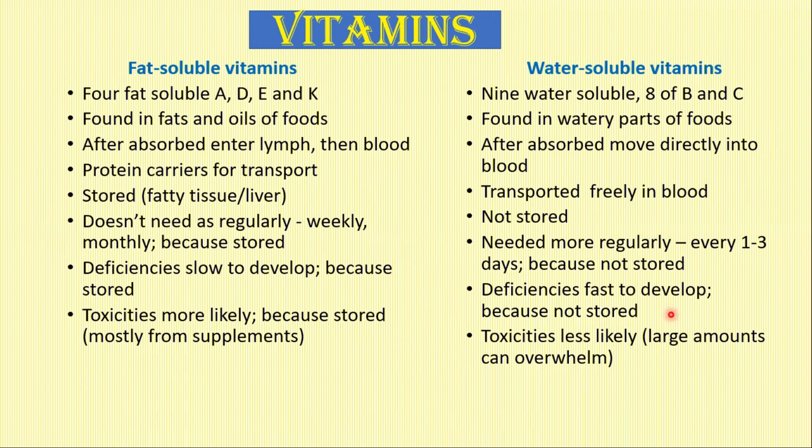Water-soluble vitamins contain mainly vitamin B — eight components of vitamin B — and vitamin C, the very essential ascorbic acid. These are found in body parts of foods. After absorption, they move directly into the blood and are transported freely. These are not stored and are needed more regularly compared to fat-soluble vitamins, every one to three days. So deficiencies are fast to develop because they are excreted and not stored.